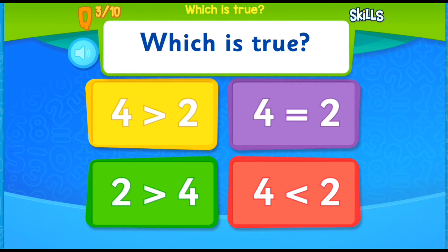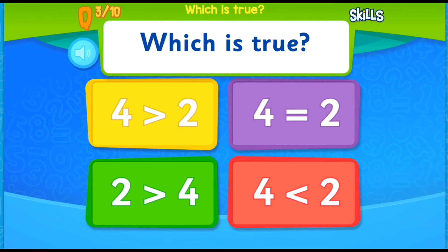So which is true? What does the yellow one say? Do you choose yellow, purple, green or red? Let's read what each of them says. So this one says 4 greater than 2. The purple one says 4 equal to 2. The green one says 2 greater than 4. And the red one says 4 less than 2. So which one do you choose guys? I said which one do you choose guys? What's that? Oh, you said yellow. Okay, let's see. It's right.